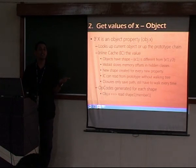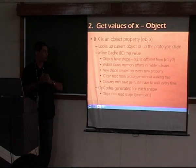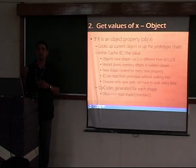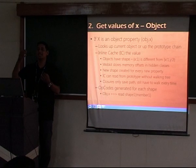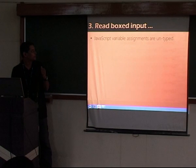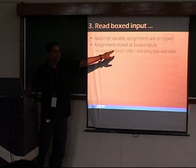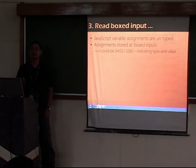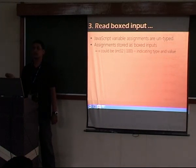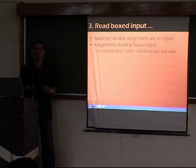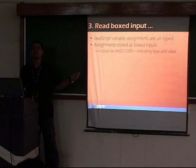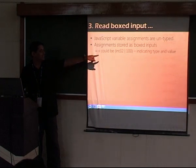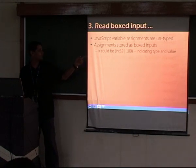That's where all loosely typed languages have to have a notion of boxing a value. When you say x = 10, the JavaScript engine boxes the value and stores it — storing not just 100, but also what the type is. And the type is stored as an OS-specific integer: int32, meaning a 32-bit integer with the value 100. Every time you say x = 100, this is actually how it's stored. Boxing is storing the value with its type tag; unboxing is reading it back.